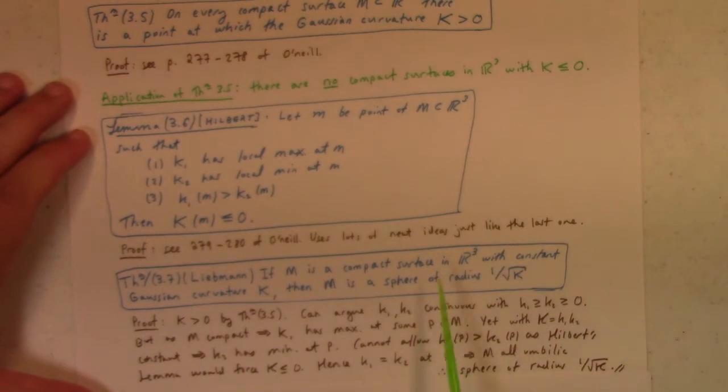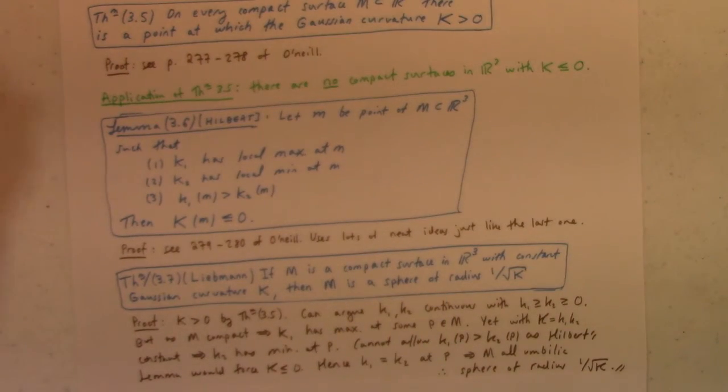As O'Neill points out to us, if we drop the stipulation of compact, which, again, if you forgot, for R3 just means that it's closed and bounded, or if you want to get all fancy, every open cover admits a finite sub-cover. If we drop the compact condition, though, there are examples of constant Gaussian curvature things which are not spheres. But, in any event, that is section 6.3 of O'Neill in a nutshell.